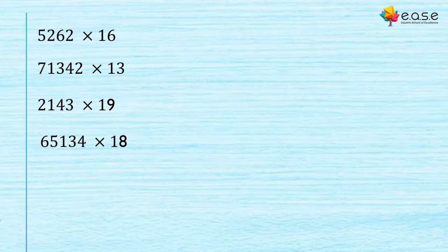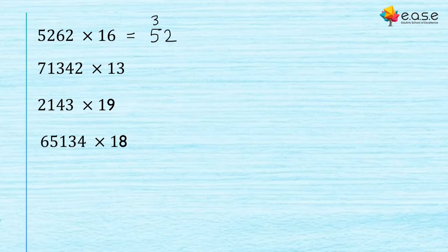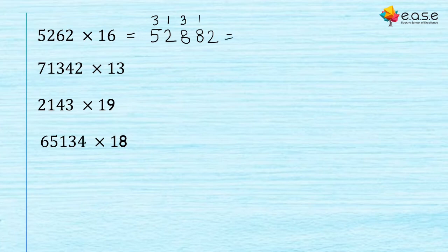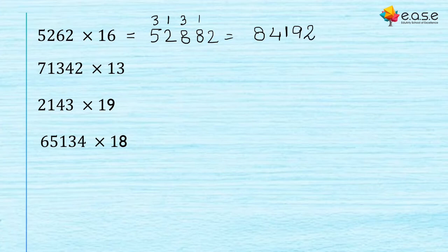Now let's try some practice sums. Write the first digit 5 as it is. Then 6 × 5 = 30, 30 + 2 = 32. Then 6 × 2 = 12, 12 + 6 = 18. Then 6 × 6 = 36, 36 + 2 = 38. Then 6 × 2 = 12. Adding up: 5 + 3 = 8, 2 + 1 = 3, 3 + 1 = 4, 8 + 3 + carry = 9, giving final digits including 2.